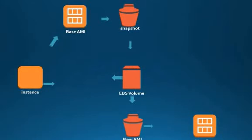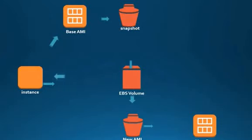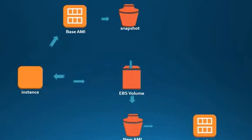Once that volume is ready, it gets attached to the instance. This is how your EC2 instance gets spun up with the AMI you chose. Once the EC2 is up and running, you can configure it with additional software or additional configurations based on the requirements of your environment or for a particular application.